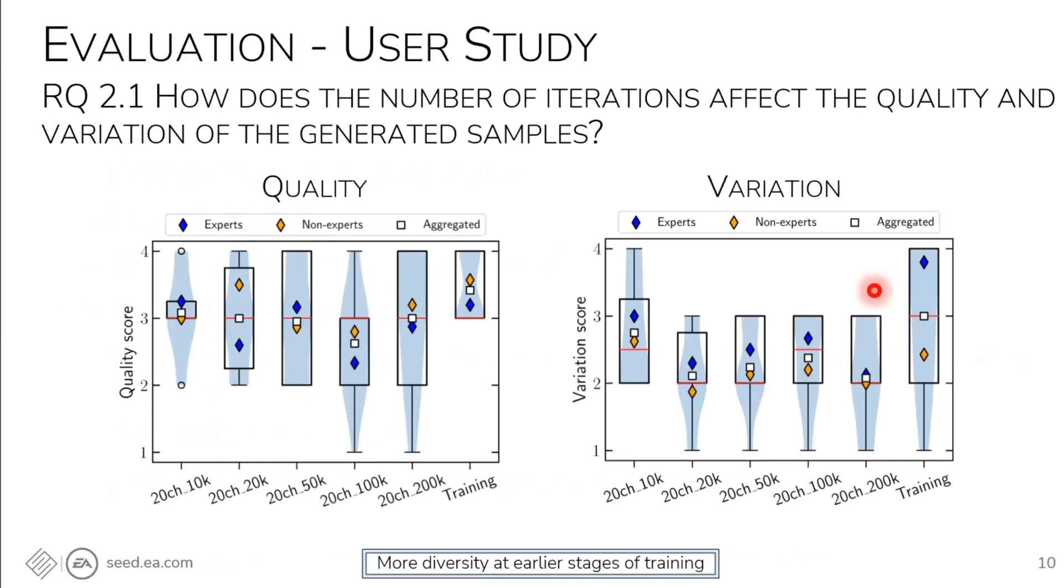Analyzing the results of the user study, we could see that quality was not greatly affected by the number of iterations. You could see here in white, the white squares, the mean, and it fluctuates very little, around three. However, between 10 and 50,000 iterations, the distributions are more compact. In terms of variation, on the other hand, there's a sharp decline between 10 and 20,000 iterations. We can see that indeed, having less training increased the variation. And a very interesting point here is that we can see the yellow points are the non-experts, and they have trouble even in the training sense to discern or separate different sounds.